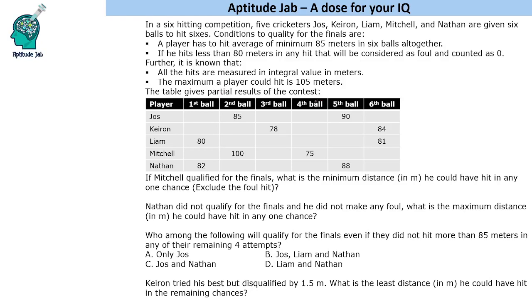First question: if Michelle qualified for the finals, what is the minimum distance he could have hit in any one chance, excluding the foul hit? Since Michelle is qualifying, his average is 85, so his minimum total required is 510. The foul hit is counted as 0, not 75.